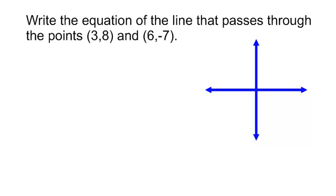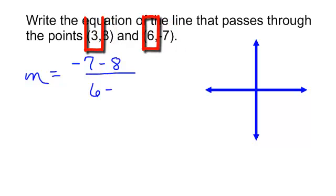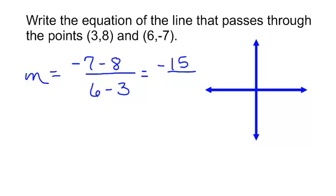First of all, I want to find the slope of this line. The slope will equal the y minus the other y. That would be negative 7 minus 8 divided by 6 minus 3. In the numerator, negative 7 minus 8 is negative 15. In the denominator, 6 minus 3 is just 3. My answer is negative 5.